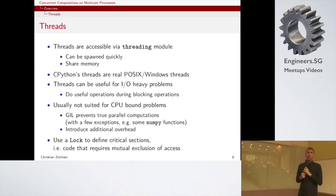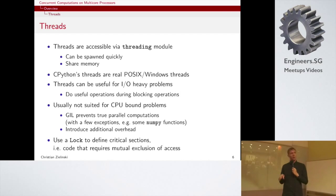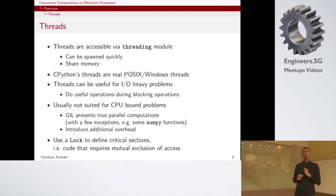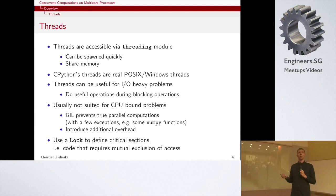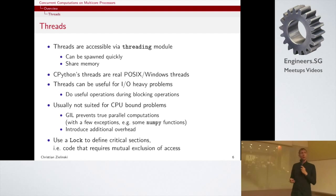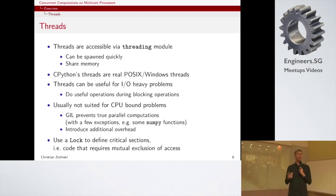Most of this talk I want to cover the multiprocessing module, because it lets us circumvent the GIL problem. But for comparison, I first want to give a short example about threads. The advantage of threads is they're very lightweight — all threads share the same memory and one interpreter instance, so they can be spawned very quickly. The CPython interpreter starts proper operating-system-level threads: on Windows, proper Windows threads; on Unix, proper POSIX threads.